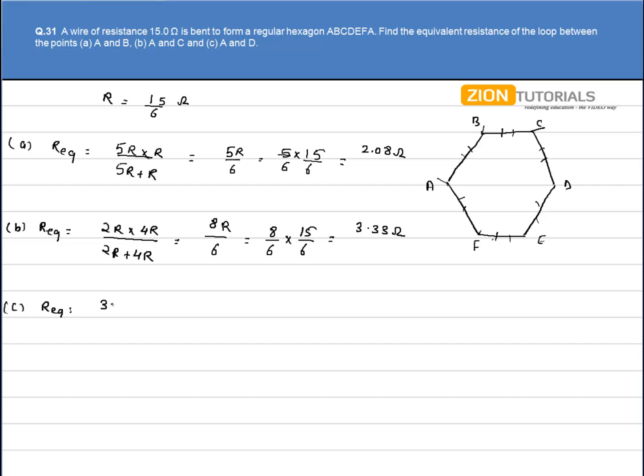So we have 3R into 3R divided by 3R plus 3R. So we have 9R by 6 that gives 9 into 15 by 6 into 6 that gives the answer to be 3.75 ohm.